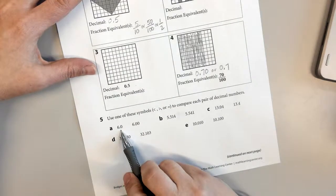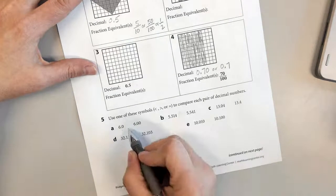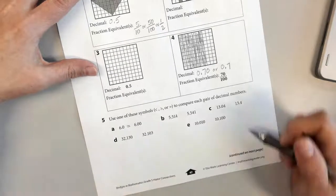Both of these are six, right? Six and zero tenths, six and zero hundredths, those are equal. So I'm going to give them an equal sign.